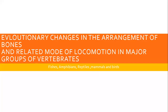یہ پانچوں گروپ ایک ہی زمانے میں زمین کے اوپر موجود نہیں تھے۔ Evolution کے لحاظ سے سب سے پہلے fishes کی evolution ہوئی، پھر amphibians، پھر reptiles، اور پھر mammals اور birds۔